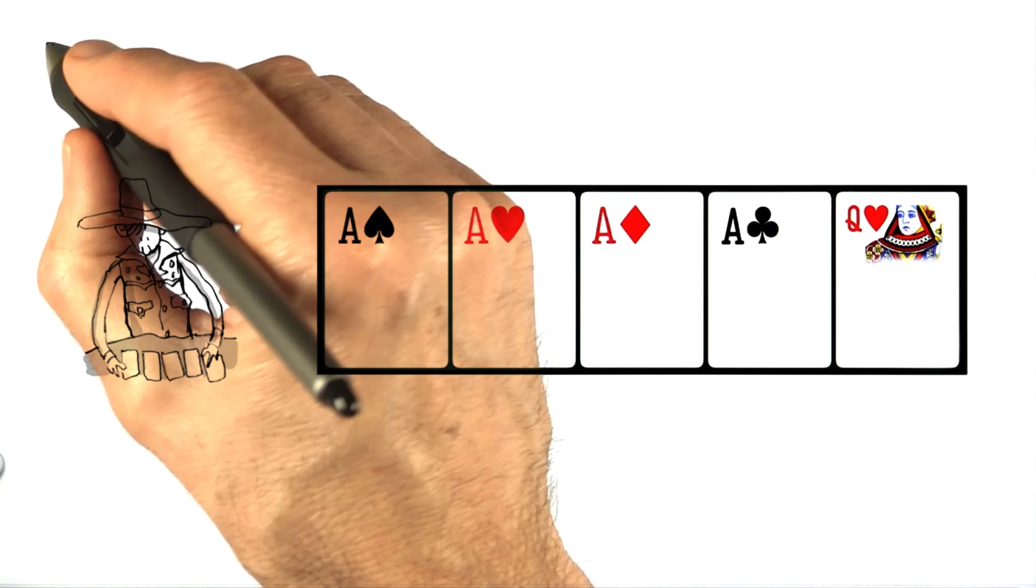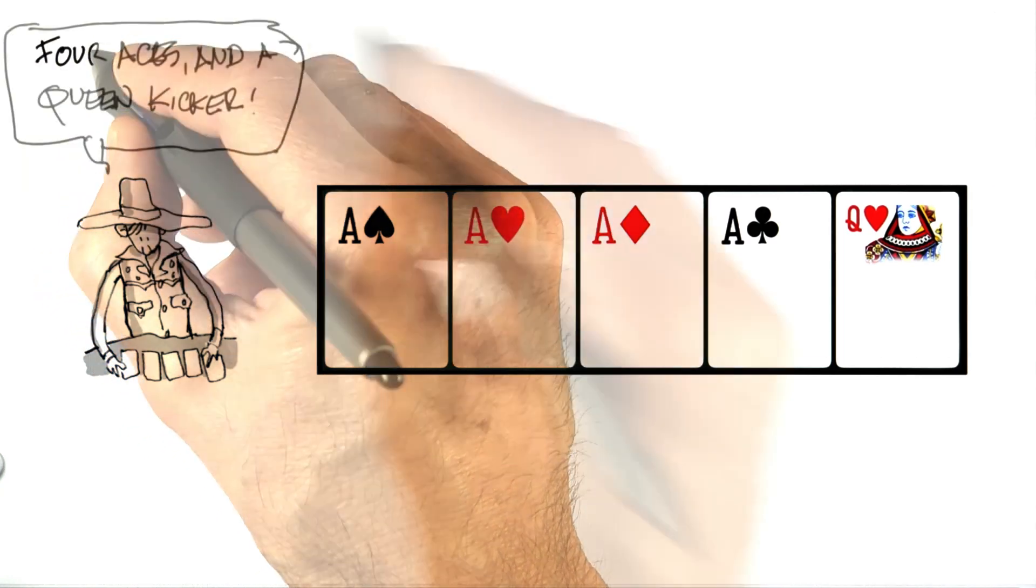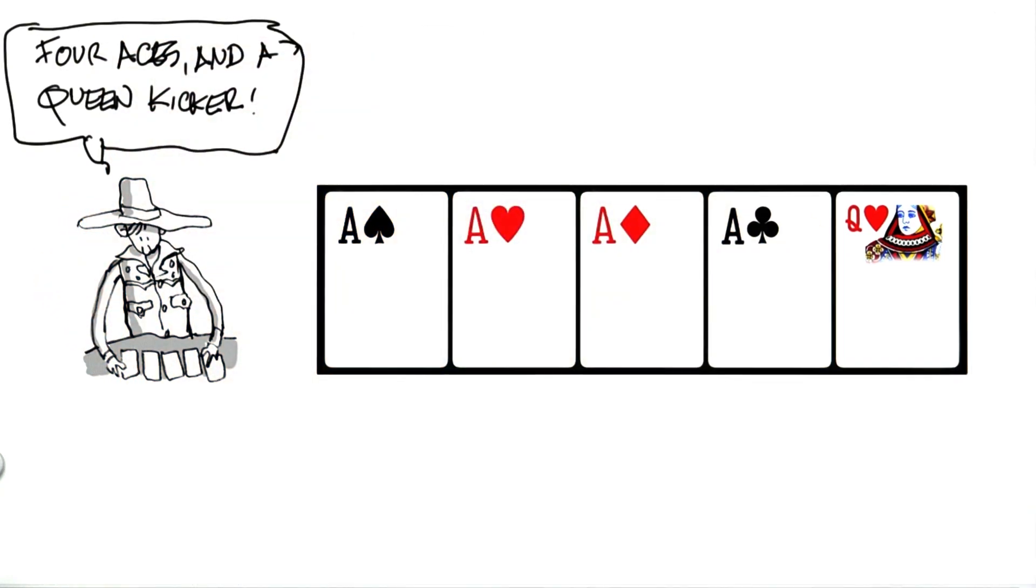Here's another hand. Let's see what our player would declare for this hand. Four aces and a queen kicker. Four aces is the major rank, which is a 7. An ace is card rank number 14, and the queen is card rank number 12.